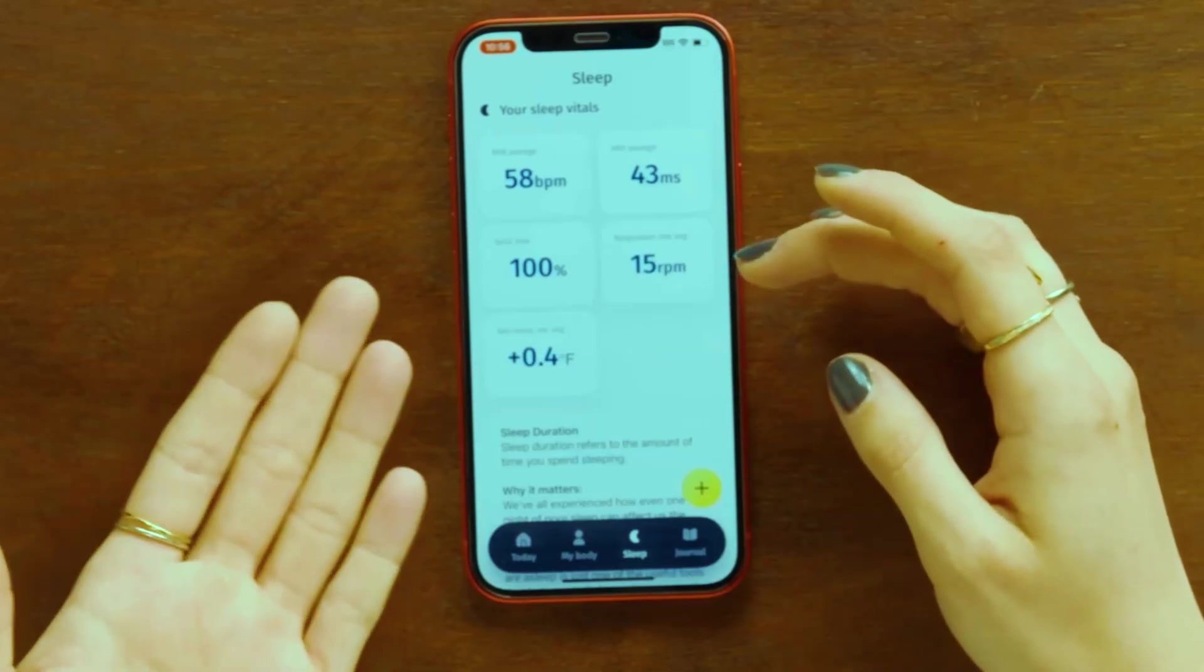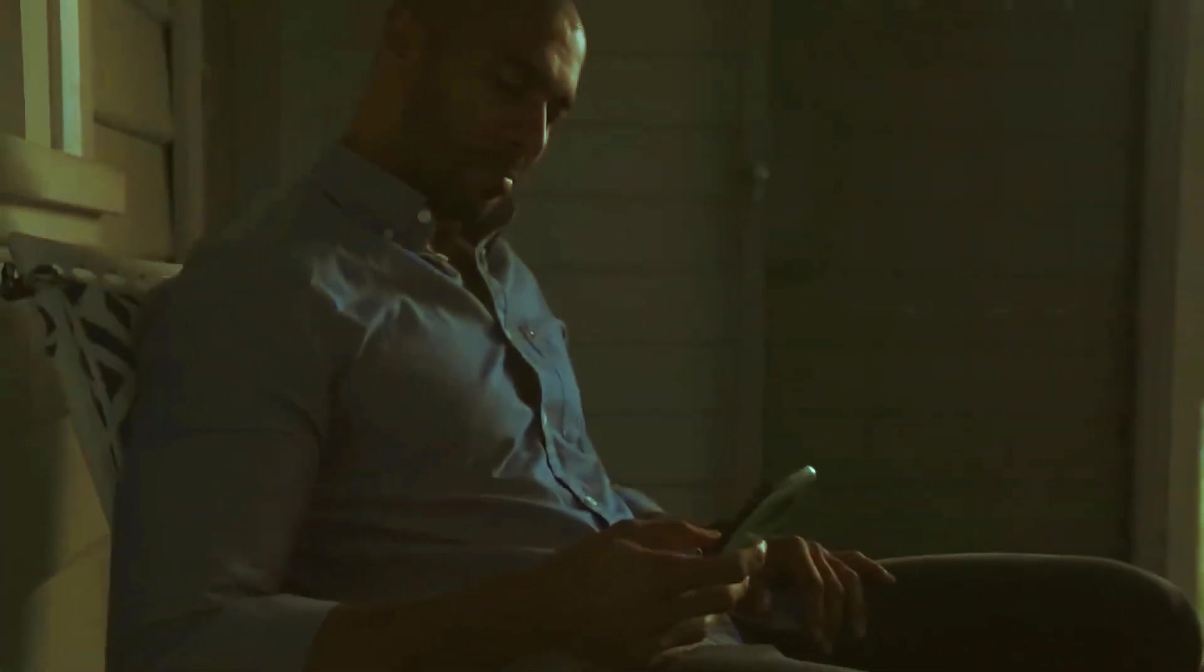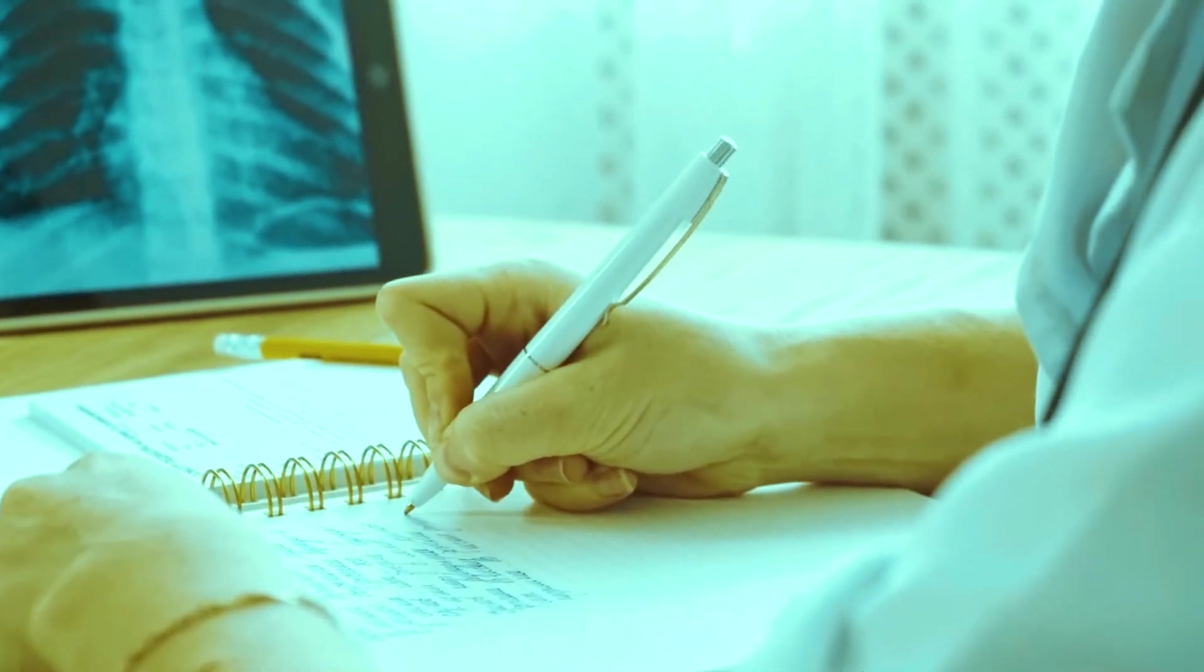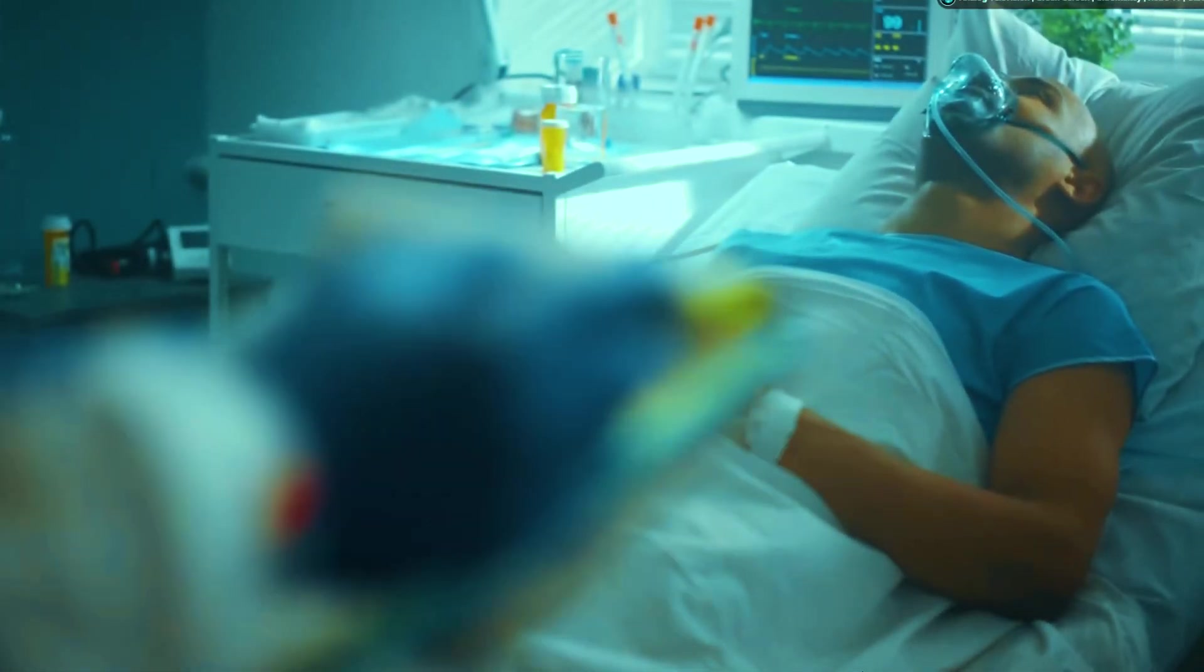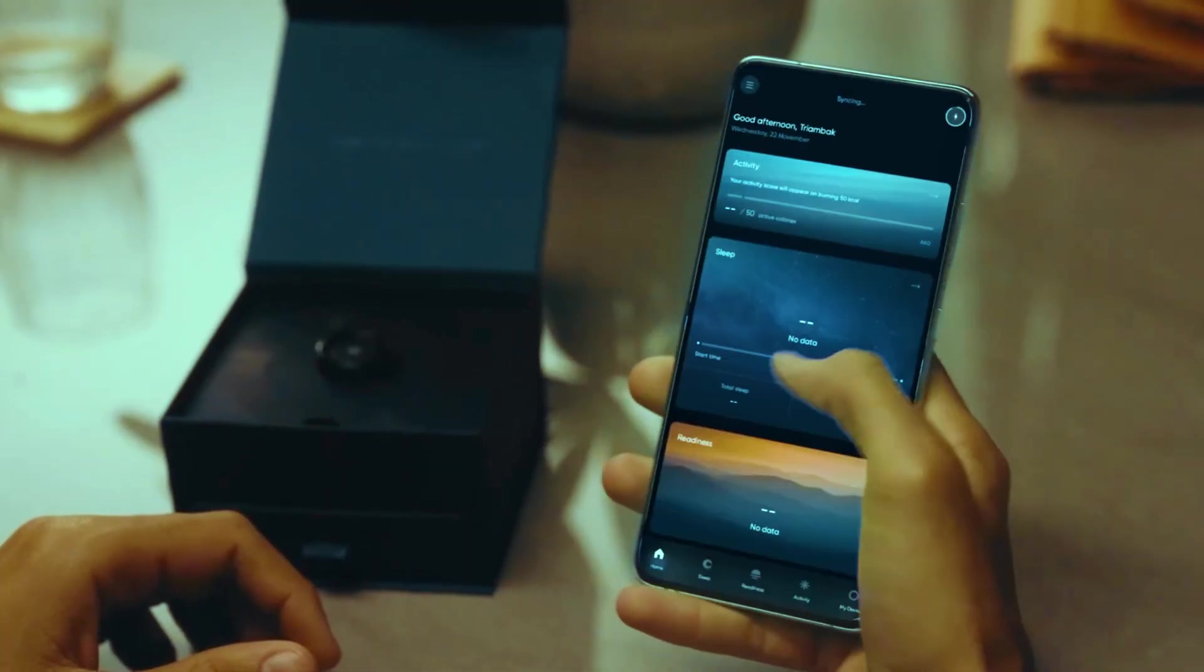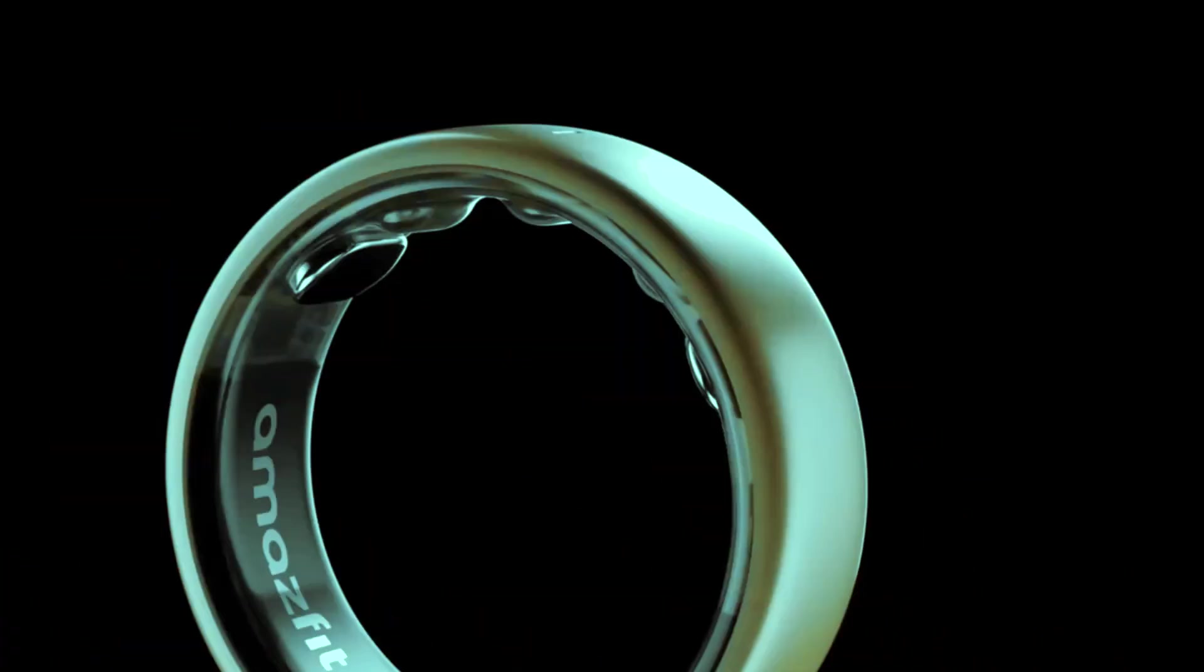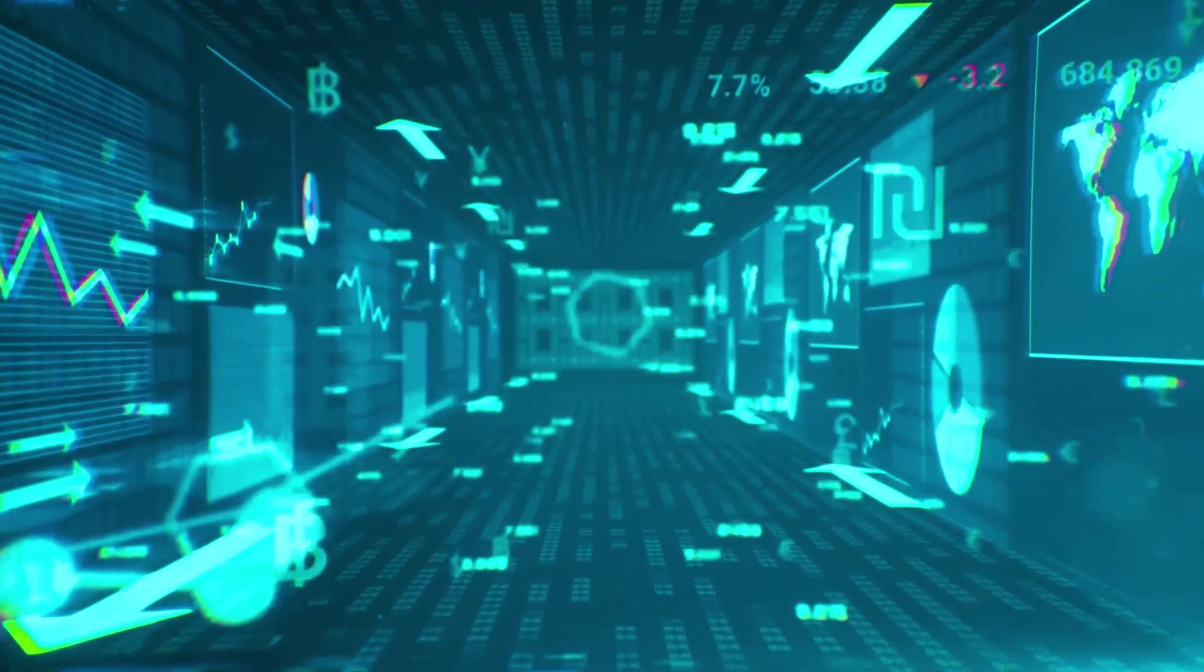The first shocking warning comes quietly, almost innocuously. A user, feeling perfectly healthy, receives an alert on their phone: a serious anomaly detected. Curiosity turns to panic as a doctor's follow-up confirms it. The ring predicted the issue days before any symptoms appeared. Word spreads fast: the device can foresee illness. The world reacts with a mixture of awe and unease. Media outlets hail it as a breakthrough in preventative health, while skeptics warn of over-reliance on algorithms.